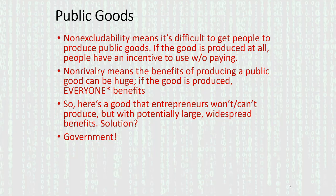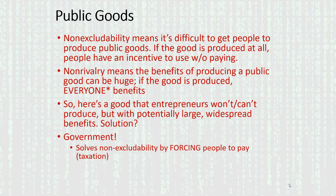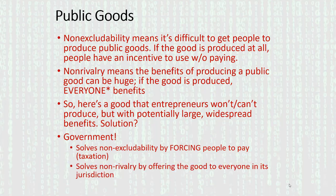We definitely want these goods to exist, so how are we going to get them? The solution is going to be government — and this is our segue into the economics of government. Government will solve the non-excludability problem with public goods by basically forcing people to pay for them. How does government force you to pay for the services it provides? That's right — taxation.